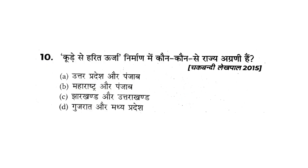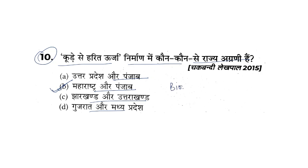Q10: Regarding Harit Urja (green energy), which states are the leaders — Uttar Pradesh and Punjab, Maharashtra and Punjab, Jharkhand and Uttarakhand, or Gujarat and Madhya Pradesh? The correct answer is Maharashtra and Punjab. In Harit Urja Nirmaan, Maharashtra and Punjab are at the top of the bio-mass mission. Other states in renewable energy include Uttar Pradesh, Madhya Pradesh, Haryana, and Gujarat.